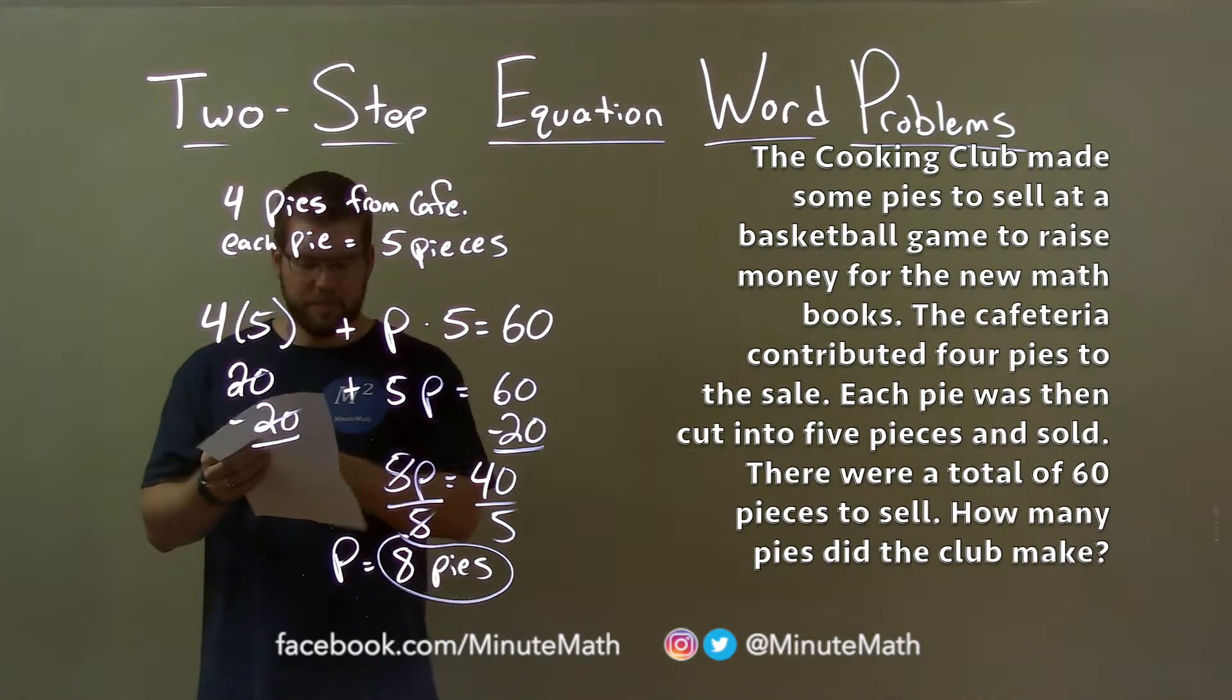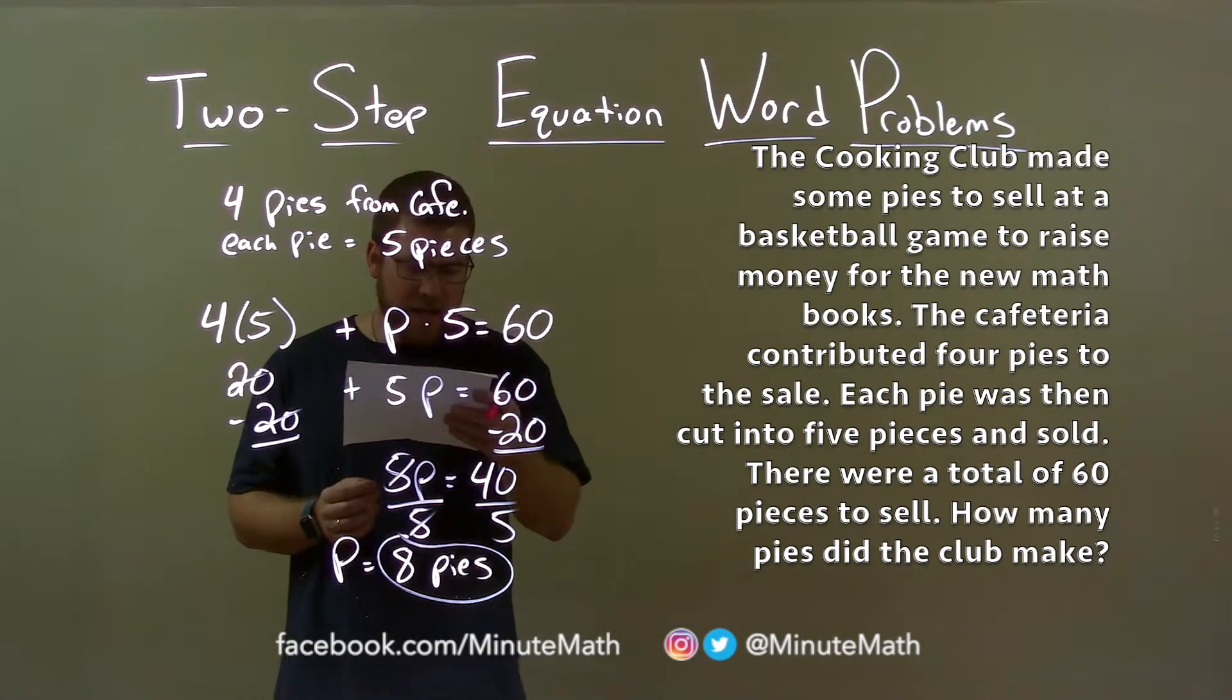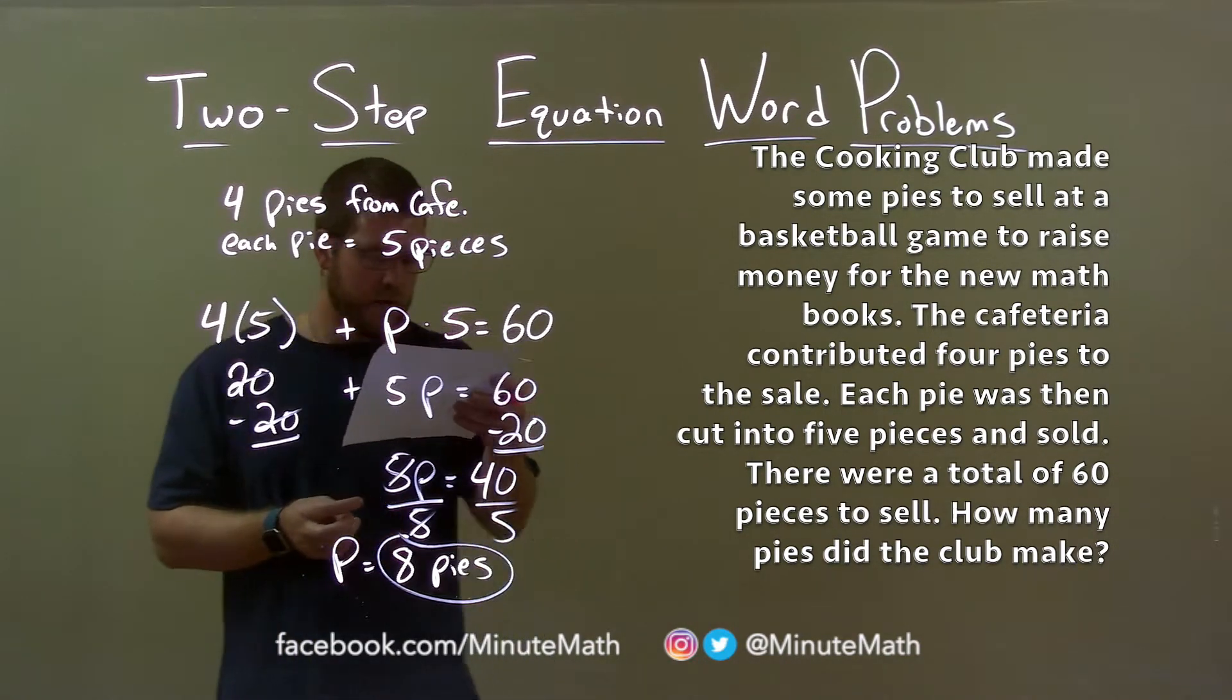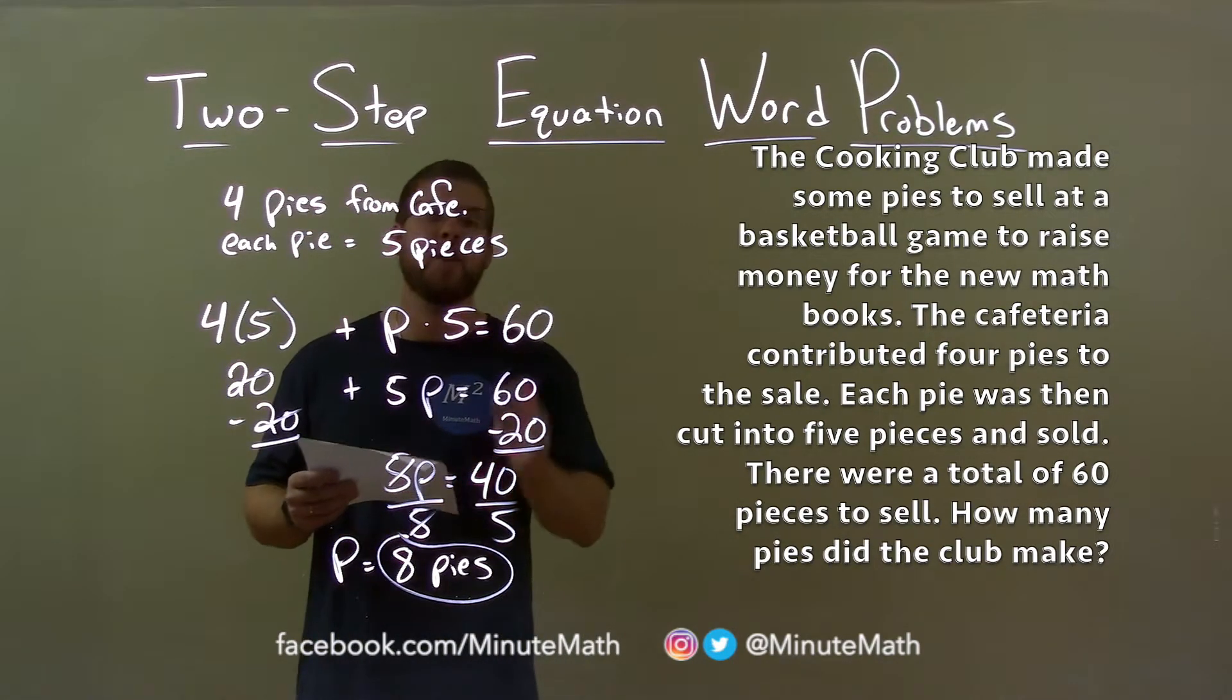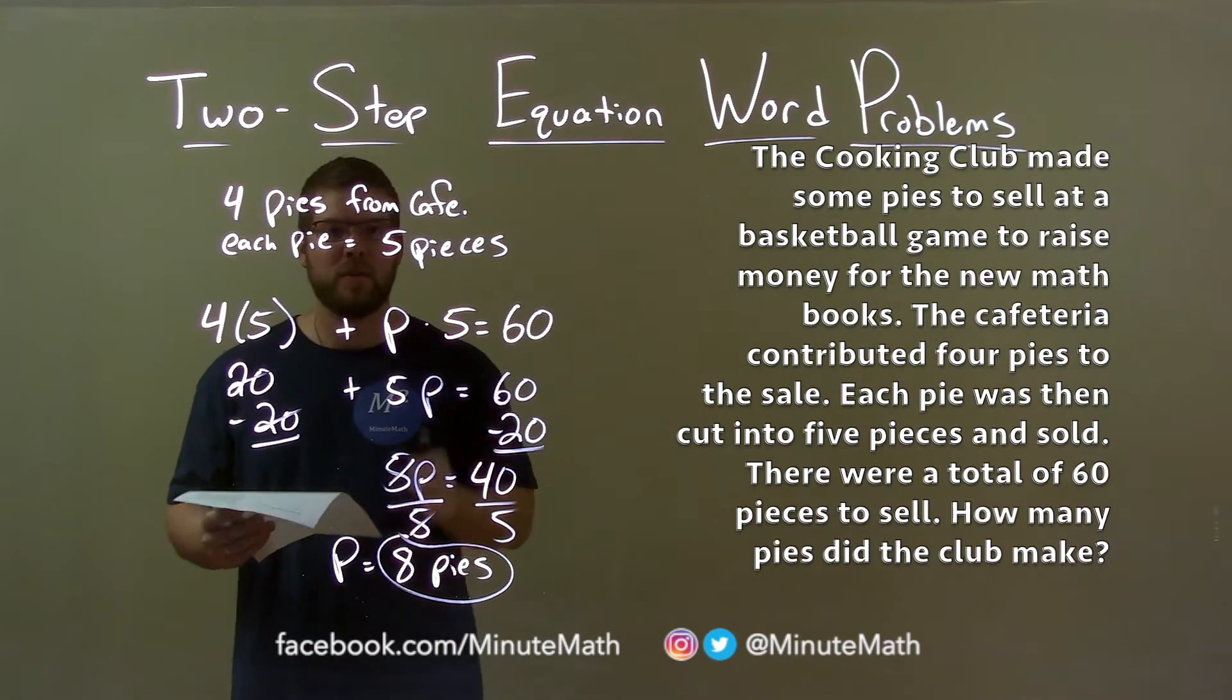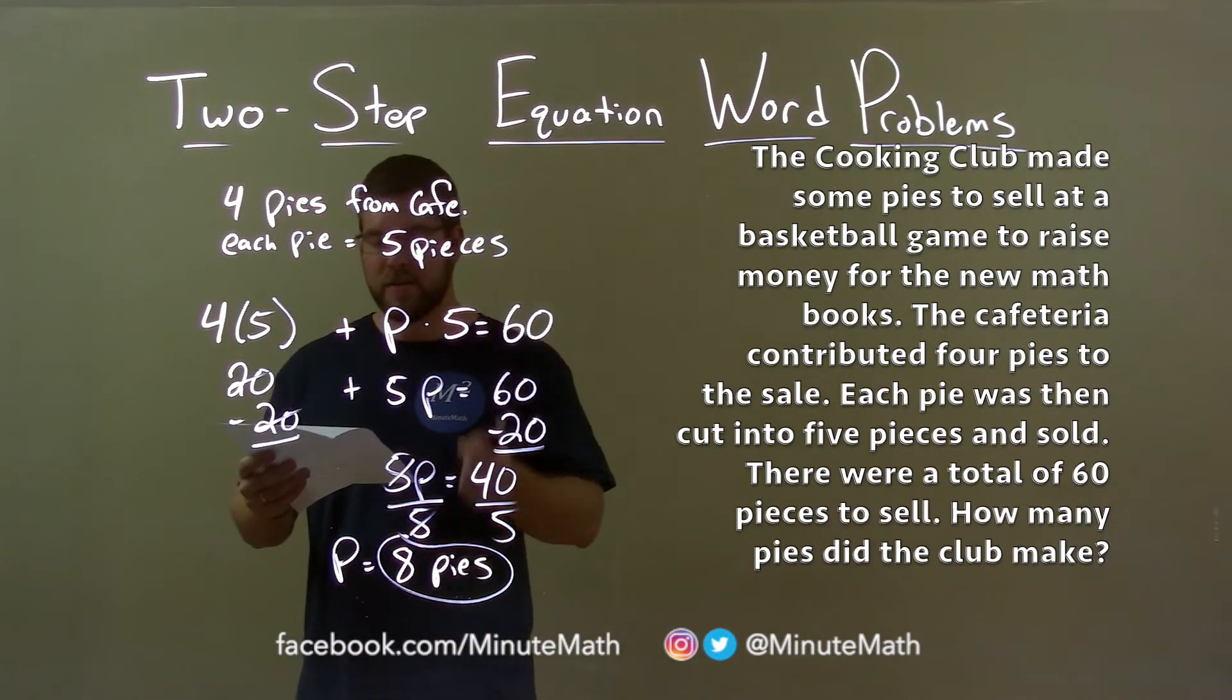So quick recap. We're given the word problem about the cooking club making pies for a baseball game fundraiser. The cafeteria contributed four pies to the sale. Each pie was cut into five pieces and sold. There were a total of 60 pieces to sell. How many pies did the club make? With that information, I created the equation four times five plus P times five equals 60, where P represents the number of pies the club made. We solved that for P and got our final answer of eight pies.